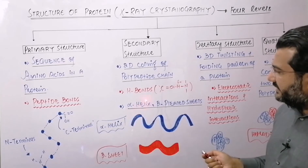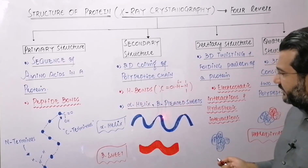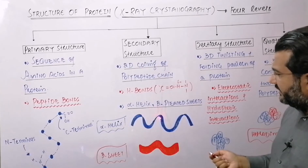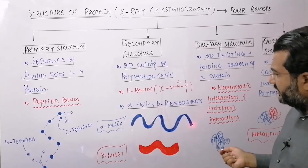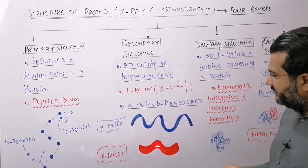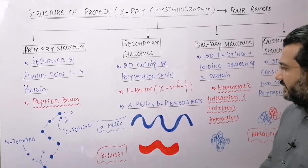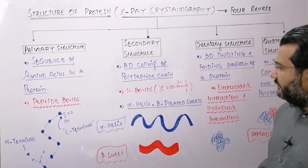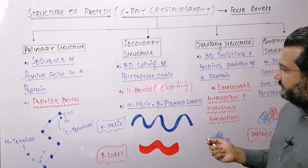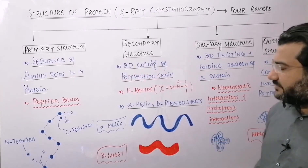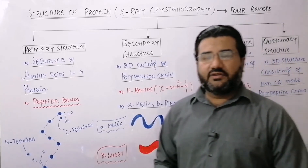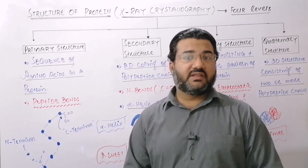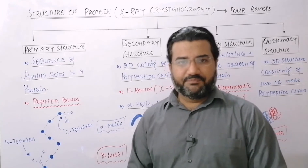Examples of secondary structure are alpha helix and beta-pleated sheets. These schematic diagrams show how the alpha helix and beta-pleated sheets look. If you want to disrupt the secondary structure of the proteins, you will have to break the hydrogen bonds which are present between the amino acid molecules.